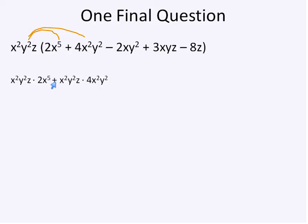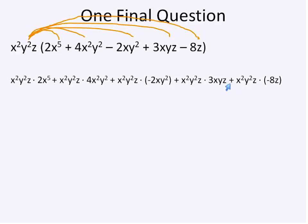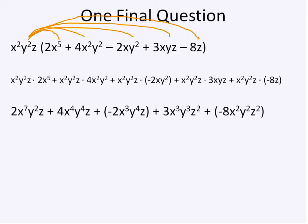So x squared y squared z times 2x to the power of 5. That's our first multiplication. And we're going to separate that with an addition symbol or plus our first term times 4x squared y squared. And again, separate that with addition, x squared y squared z times our negative 2xy squared. Same thing again, addition symbol to separate, x squared y squared z times 3xyz. And then our last multiplication problem, again separated by an addition symbol, x squared y squared z times negative 8z. And this is quite the long part of this solution. And we're going to reduce it down the same exact way we did before.